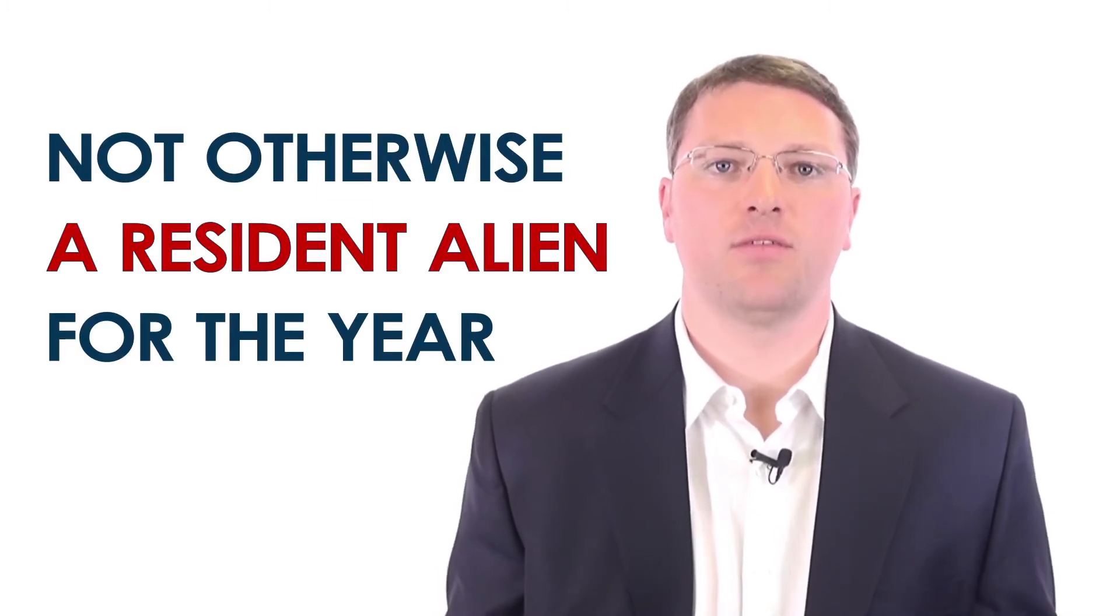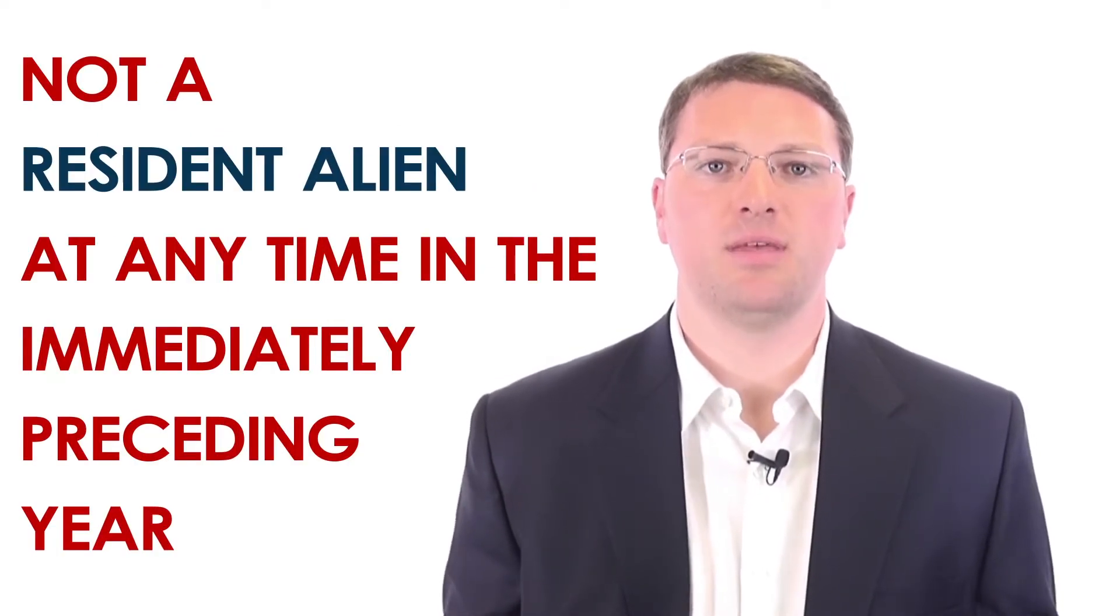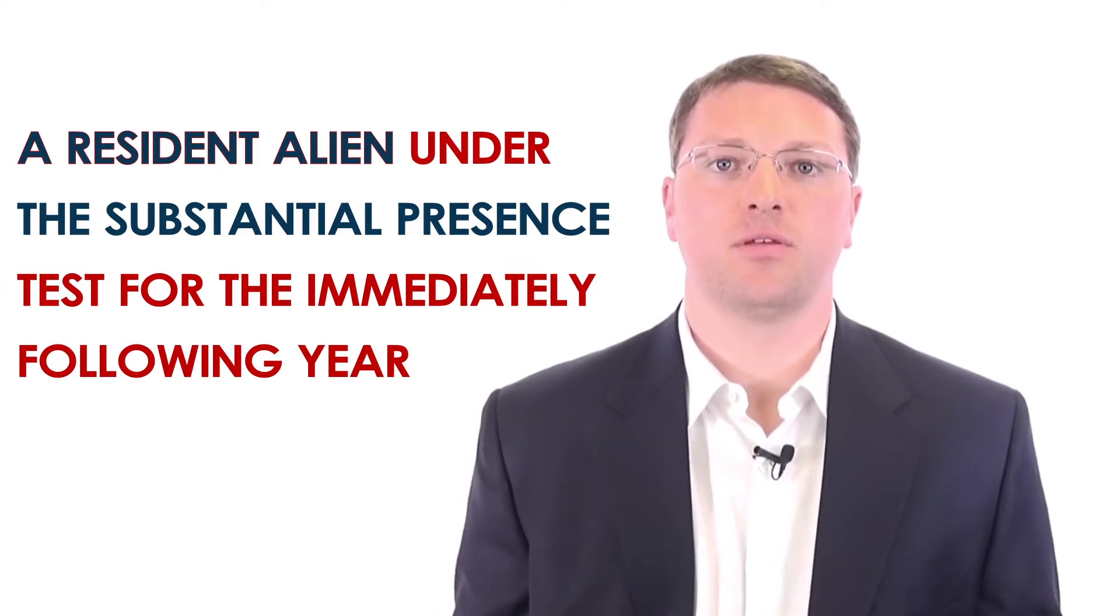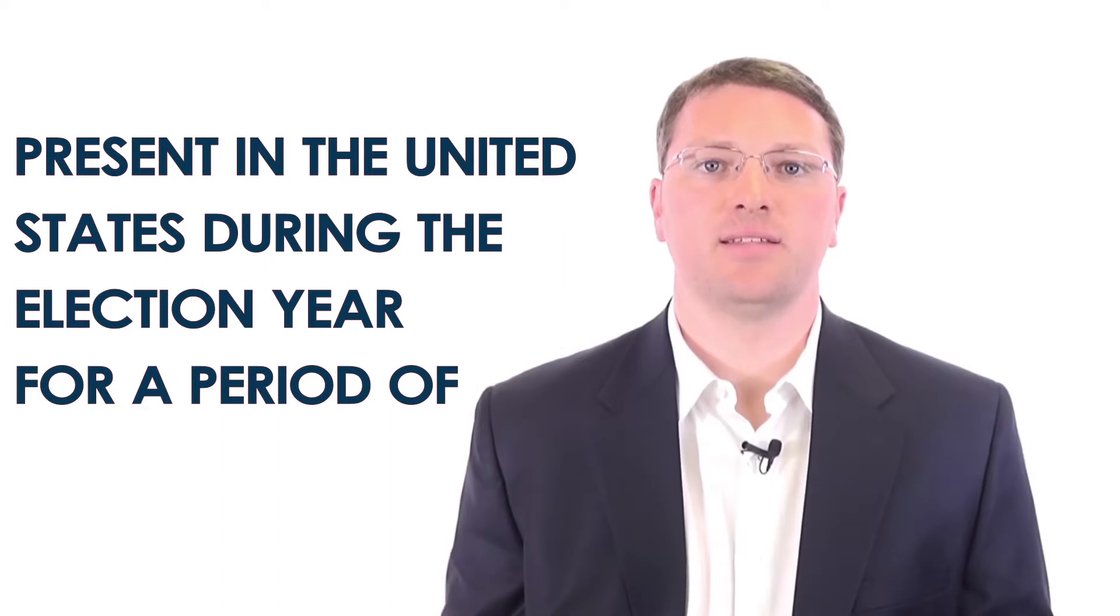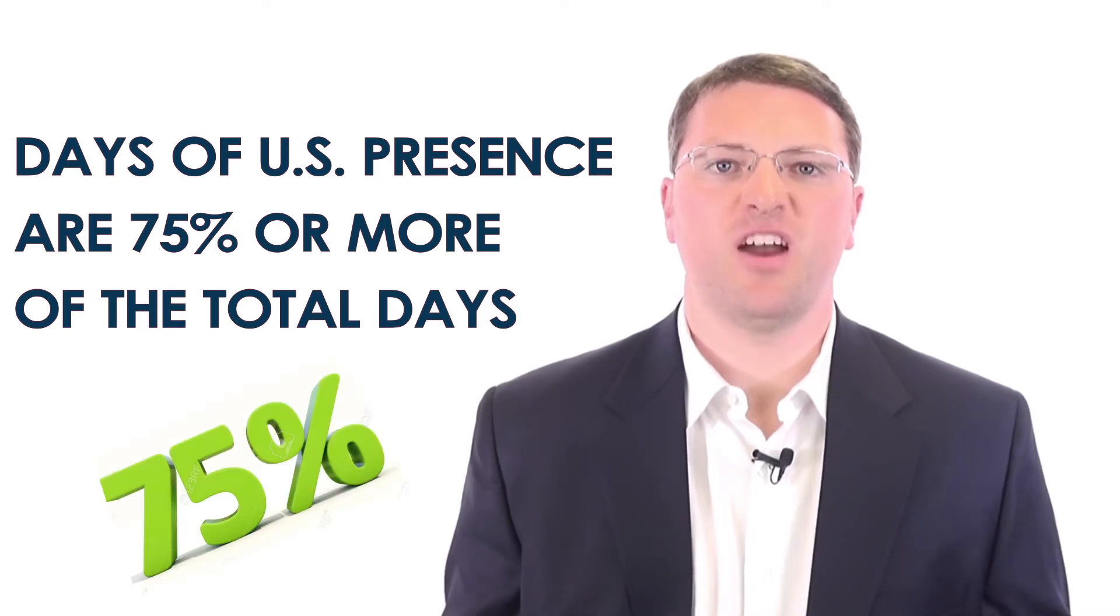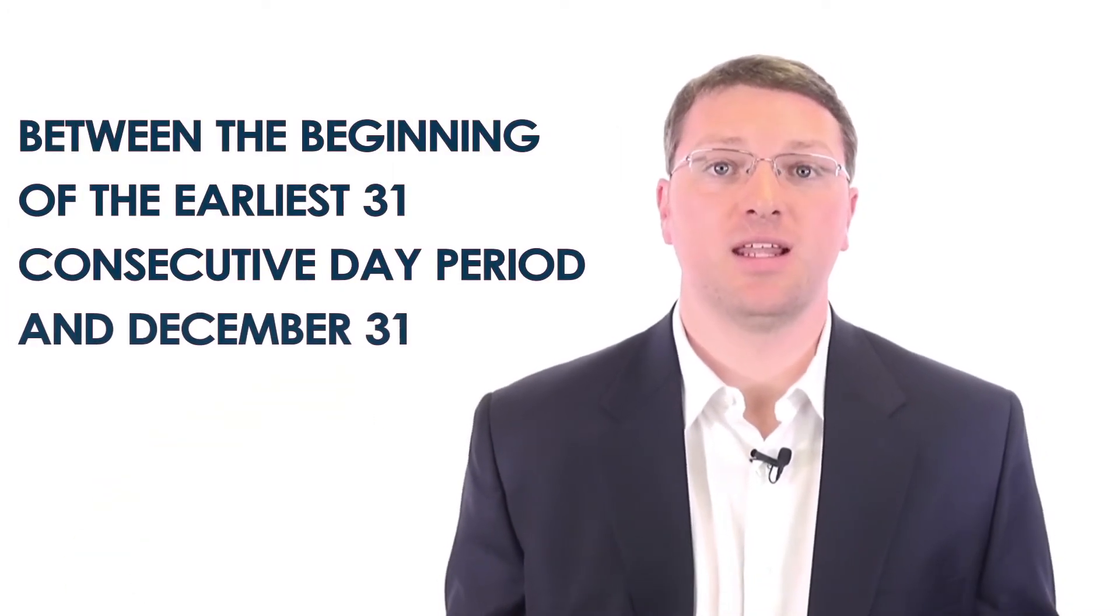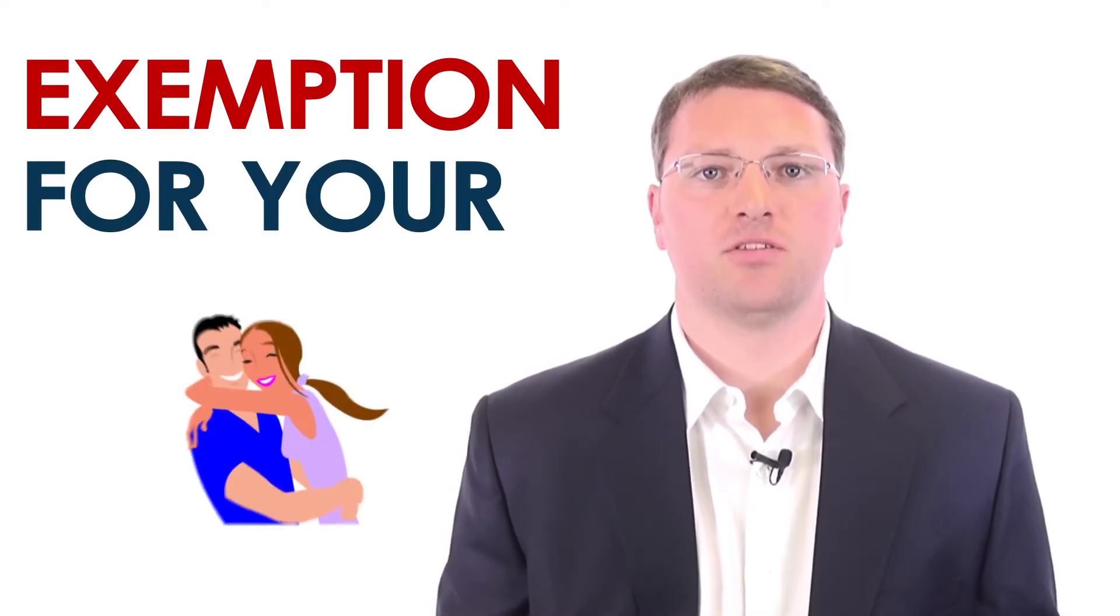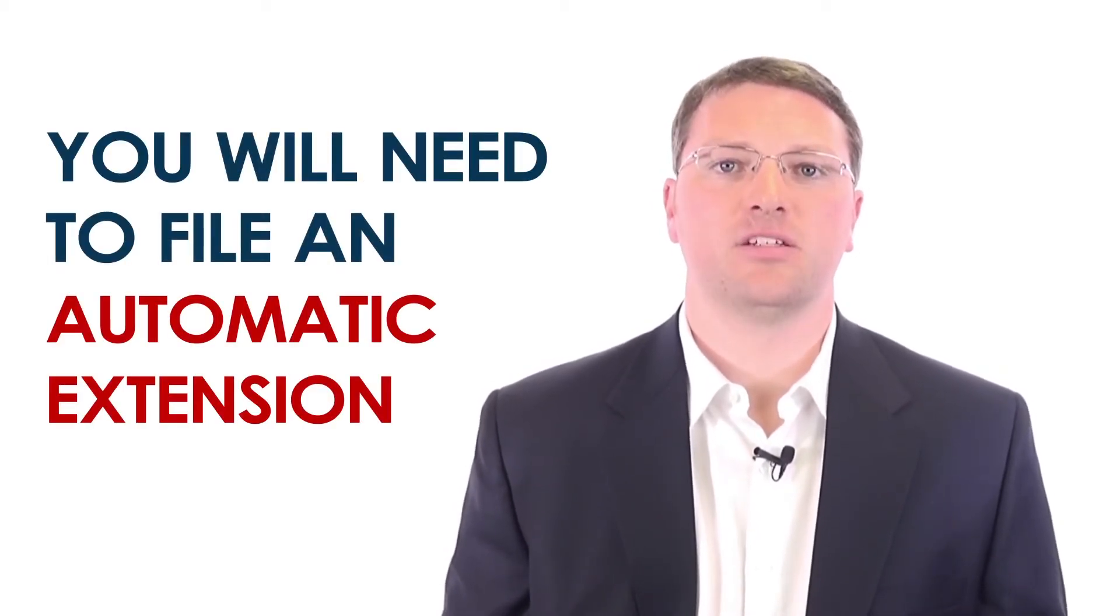You are not otherwise a resident alien for the year. You are not a resident alien at any time in the immediately preceding year. You are a resident alien under the Substantial Presence Test for the immediately following year. You are present in the United States during the election year for a period of 31 consecutive days. Your days of U.S. presence are 75% or more of the total days between the beginning of the earliest 31 consecutive day period and December 31st. If you make this election, you will be a dual-status alien and you can claim an exemption for your spouse. Also, to make the election, you must pass the Substantial Presence Test in the year following the election year, which means you will need to file an automatic extension for your return so you can file after you pass the test.